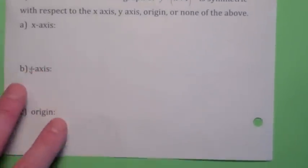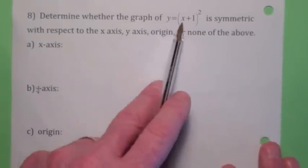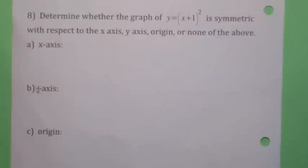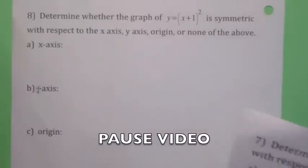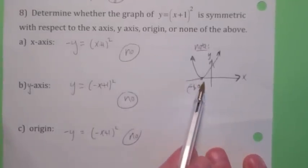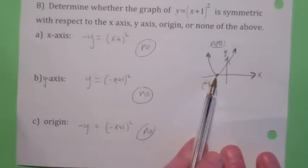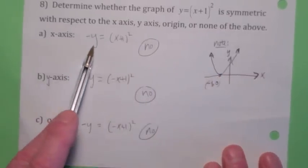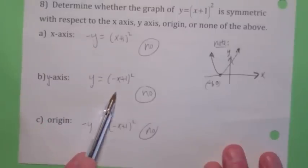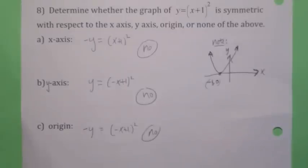One more example: y equals (x plus 1) squared. This is a parabola shifted one unit to the left, and it doesn't appear symmetric with respect to anything. If you replace negative y for y, you don't get the same equation back. If you replace negative x for x, you don't. And replacing both at the same time, you don't either. So the answer is none of the above.